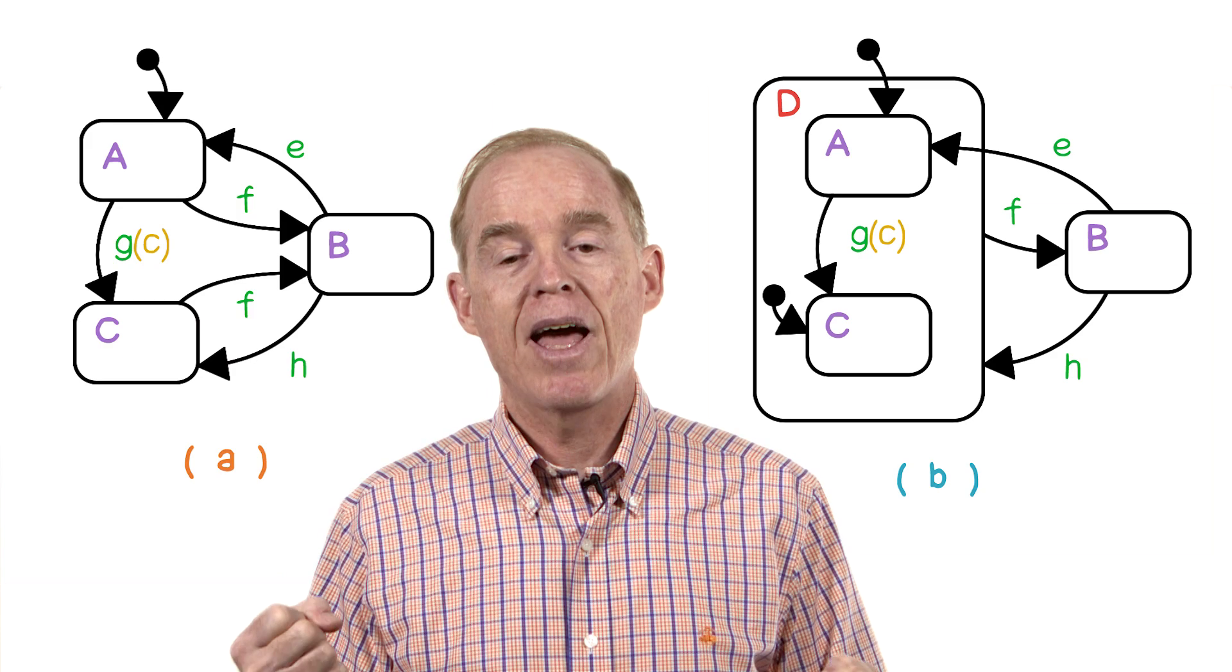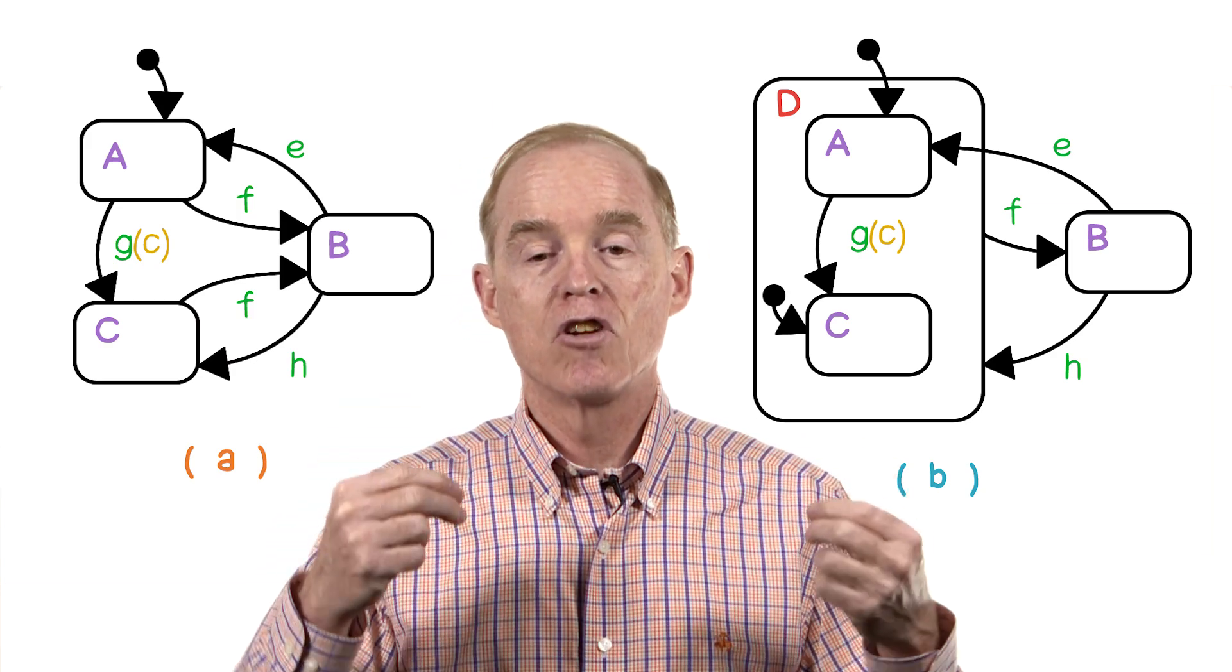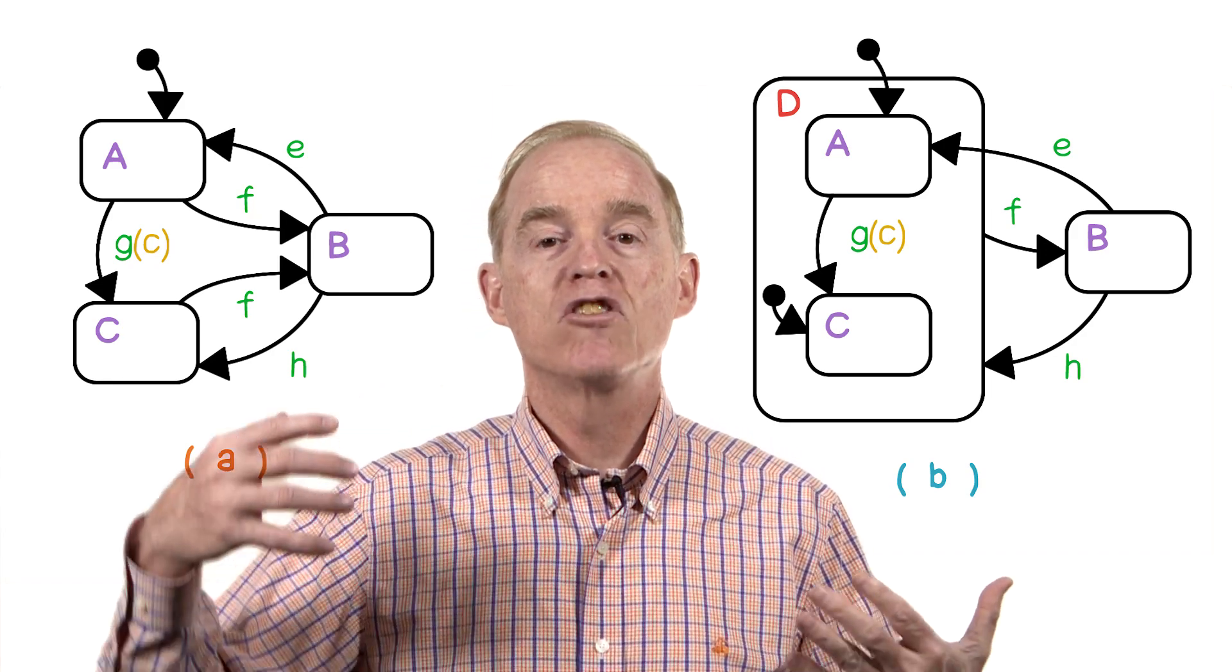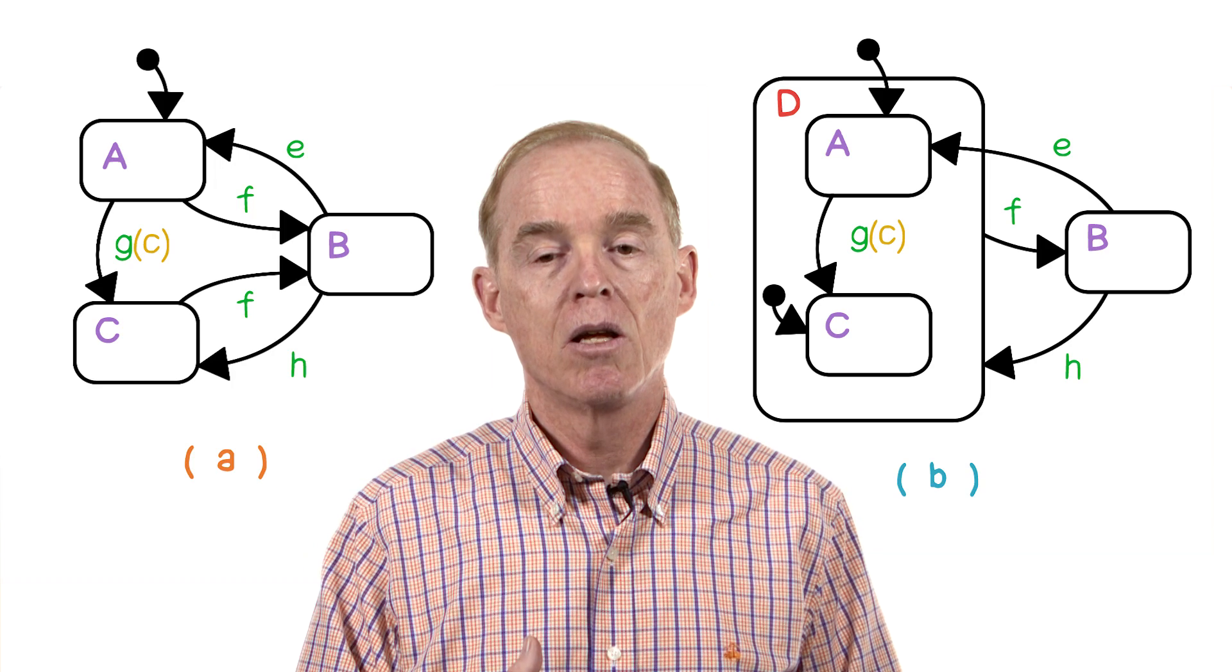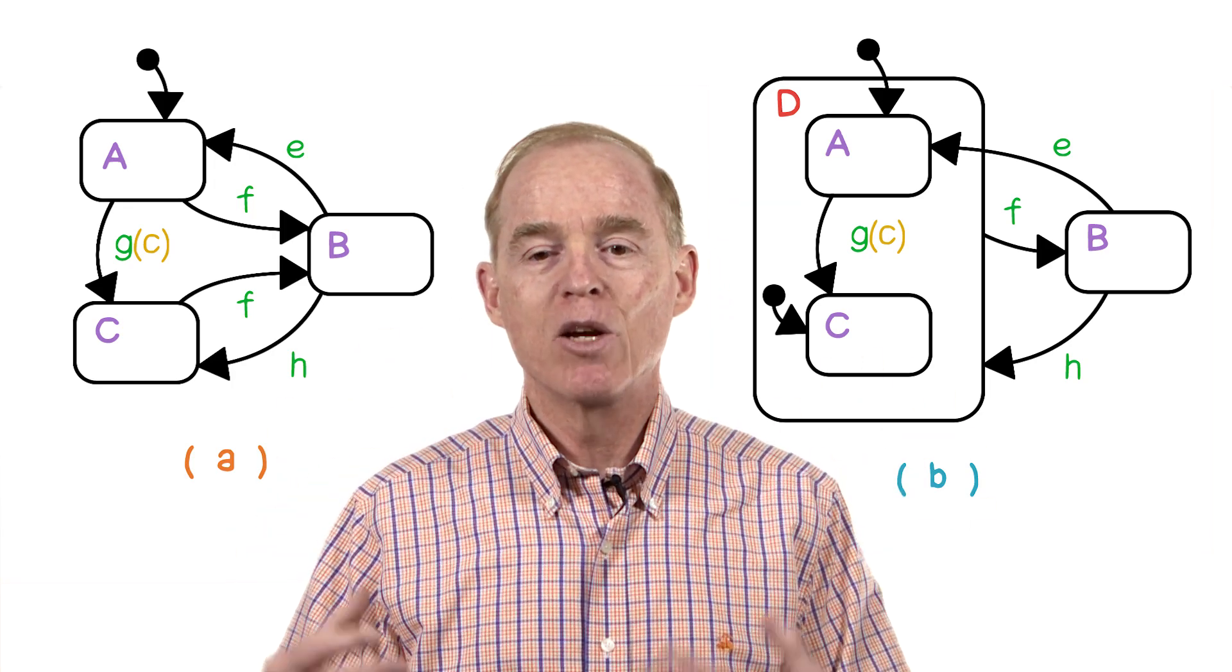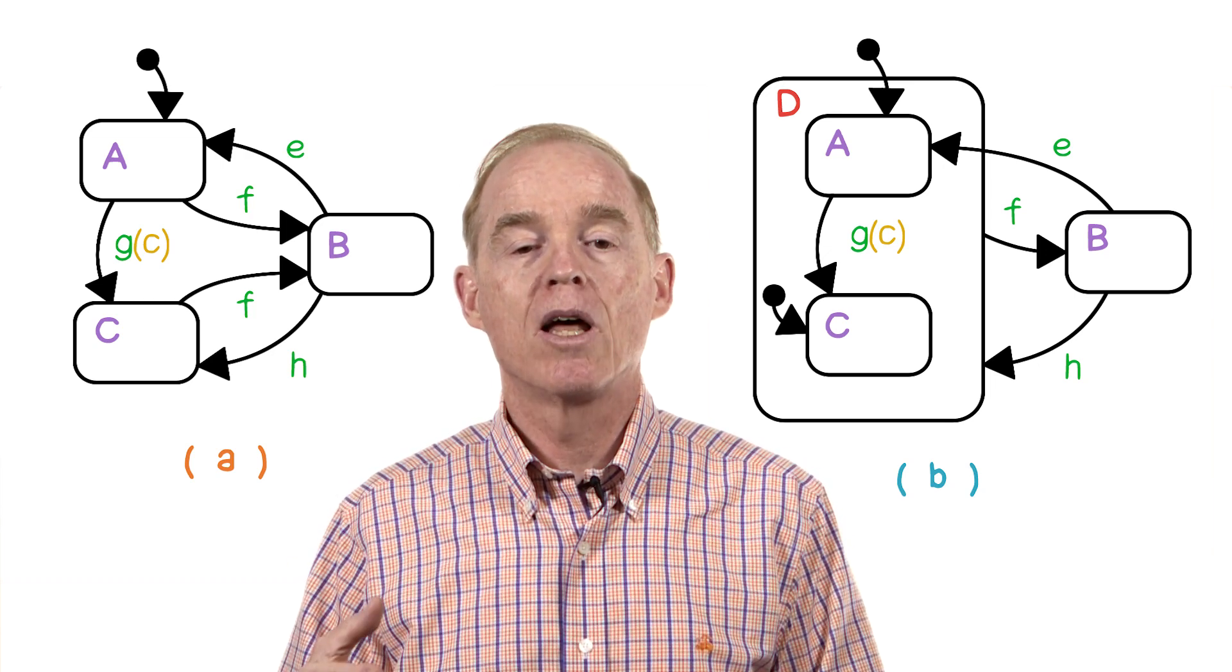Well, notice that we've added a new default state and its transition for C. That is, if a transition comes into D, to the border of D, where's it going to go? It's going to go to the default state, which is C. This is identical to what's happening on the left, where there was a direct line from B to C.